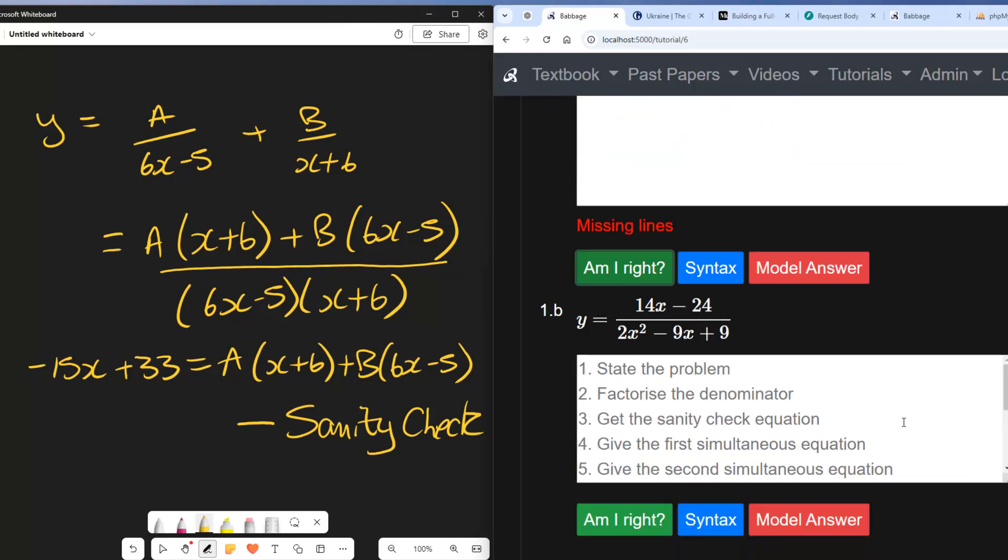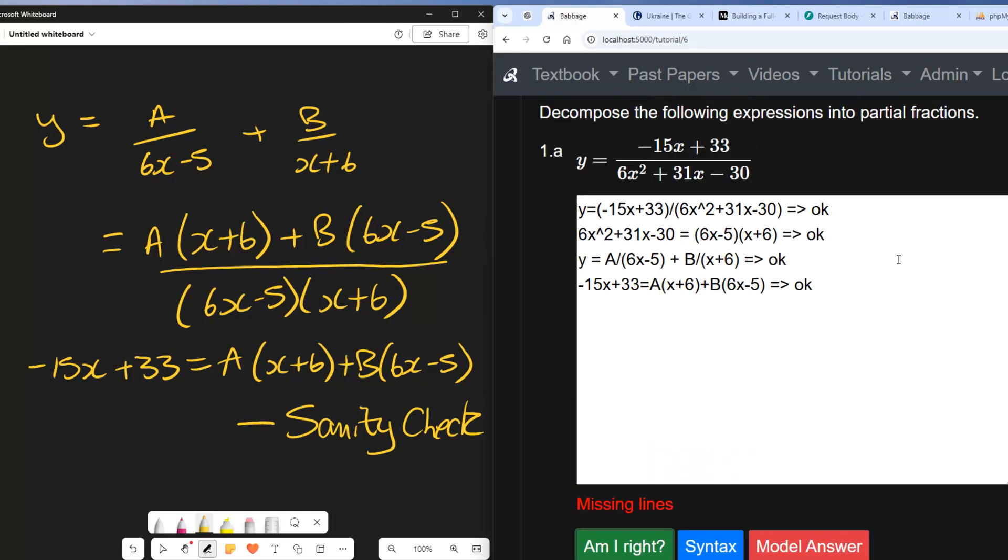The next thing we need is the first simultaneous equation. So what I'm going to do here is I'm going to compare coefficients. So I'm going to first of all take all of the things that have an x in them. So I'll start with the right hand side. So we've got A times x, so we'll have an A. And we've got B times 6x, so that's going to be plus 6B. And that is going to equal, and on the left hand side the only thing with an x in is -15, so that's going to be -15.